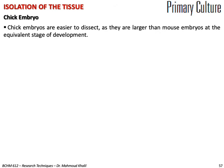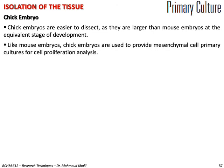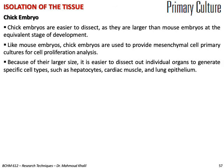For chick embryo tissue, chick embryos are easier to dissect as they are larger than mouse embryos at the equivalent stage of development. Like mouse embryos, chick embryos are used to provide mesenchymal cell primary cultures for proliferation analysis. Because of their larger size, it is easier to dissect out individual organs to generate specific cell types such as hepatocytes, cardiac muscle, and lung epithelium.